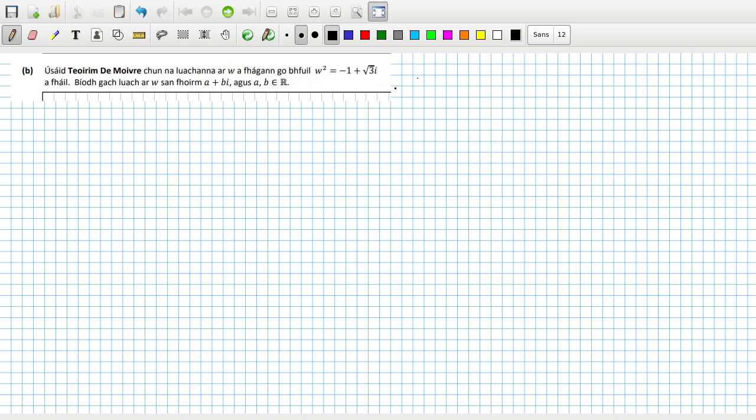Right, De Moivre's theorem. So I'm going to have to write this in polar form first. This number here, minus one plus root three, so that would be like there. Okay, so this length here is one and this length here is root three, so I can easily get that angle as a tan inverse root three, which I'm going to use degrees, which is 60 degrees.